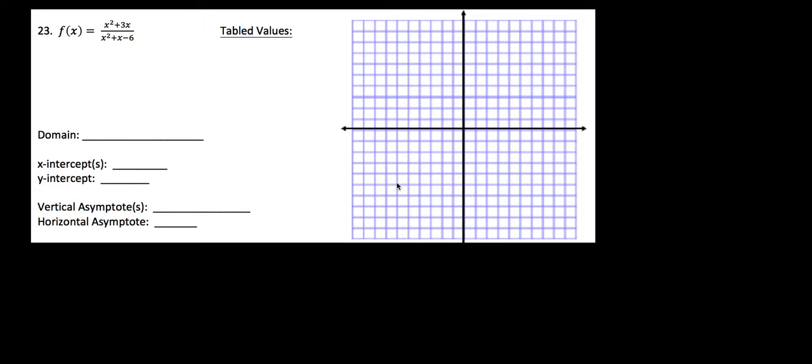We have a rational function to graph together here, and what I want you to know is it's all about the asymptotes. So essentially we're always going to find the vertical and horizontal asymptotes. We're also going to look for x and y intercepts, but beyond that we're just going to table some values and really make our graph from there.